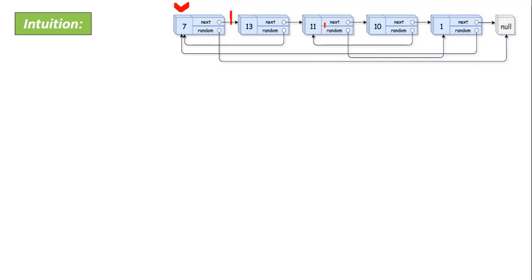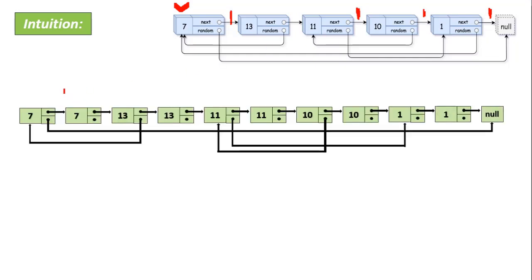Then in between 13 and 11, we insert a new node 13. In between 11 and 10, we insert a new node 11. In between 10 and 1, we insert a new node 10. And in between this node 1 and null, we insert a new node 1. So we've inserted new nodes 7, 13, 11, 10, and 1 — each placed in between their corresponding original nodes.